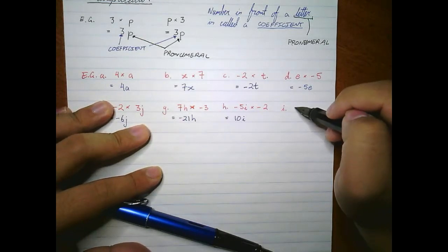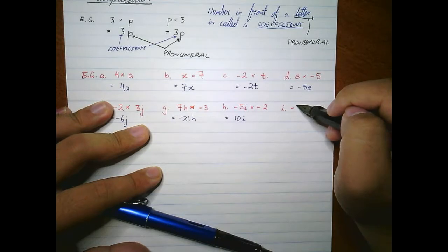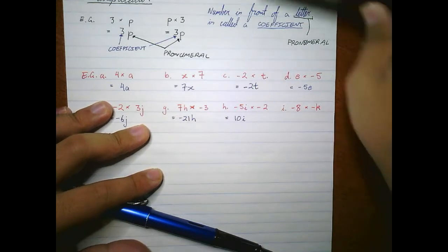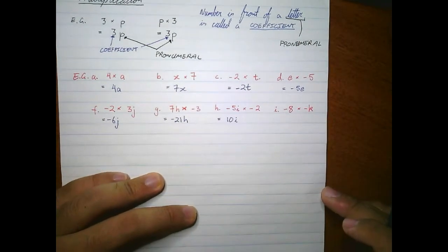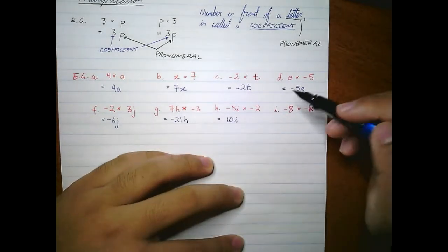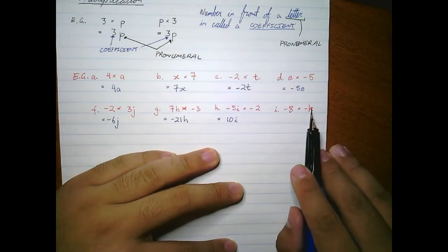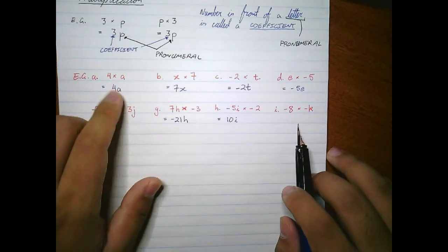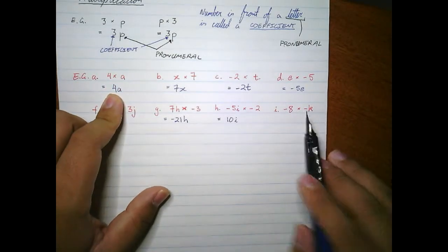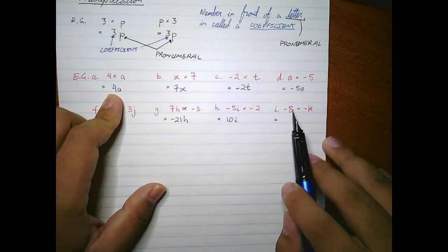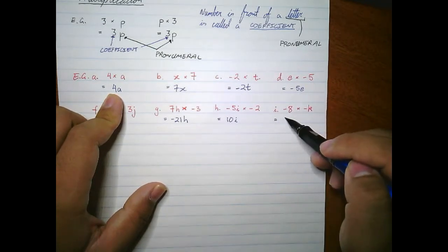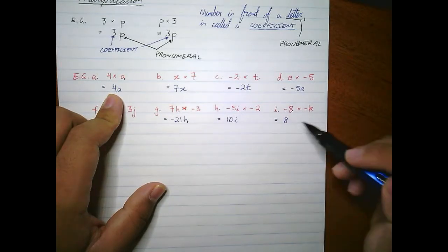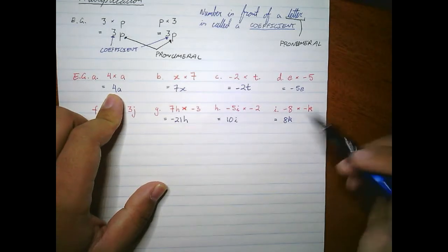For example i, let's have negative eight times negative k. This is a little tricky but it shouldn't be too confusing, because this k actually has a coefficient of one — it's like negative one k. Eight times one is eight, and a negative times a negative is a positive, which leaves us with just 8k.